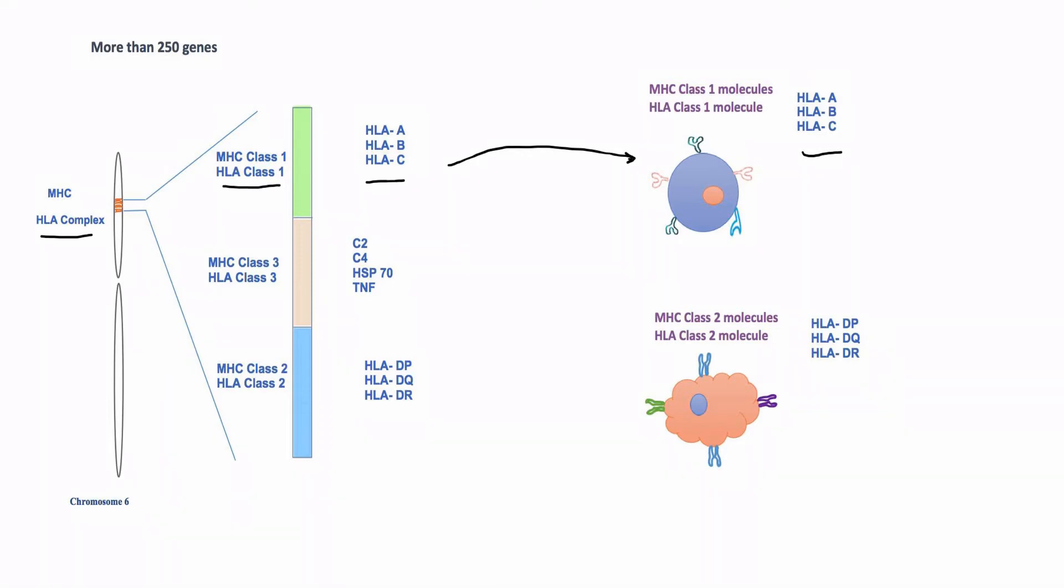Similarly, there are three classical genes in HLA class 2 region. These three genes encode HLA class 2 molecules that are present on surface of antigen-presenting cells. These genes encode three molecules that are HLA DP, DQ, and DR.